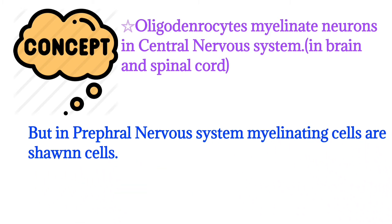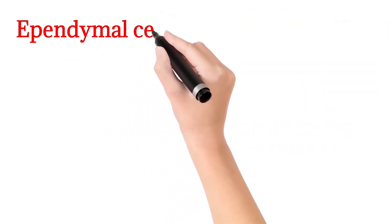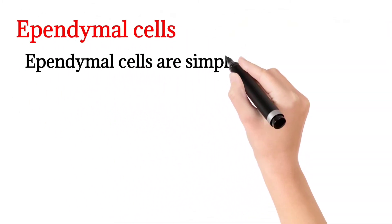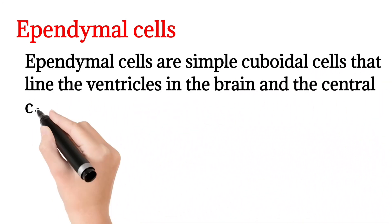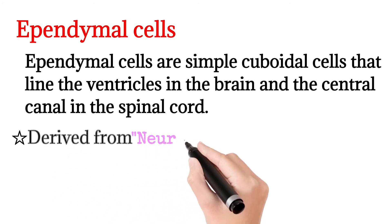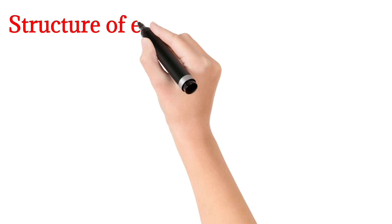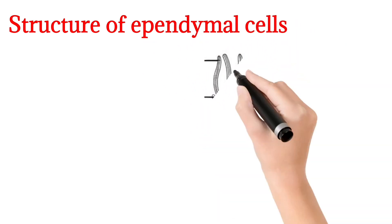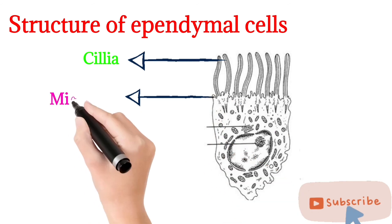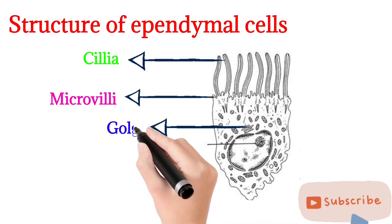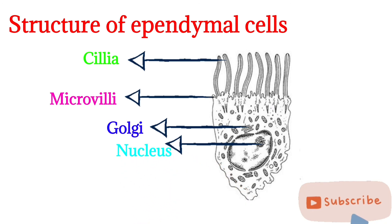The next type of cell present in the central nervous system is the ependymal cell. These are simple cuboidal cells that line the ventricles in the brain and the central canal in the spinal cord. They are derived from the neuroectoderm. Their structure includes cilia, which are hair-like projections, microvilli, a Golgi apparatus, and a nucleus.